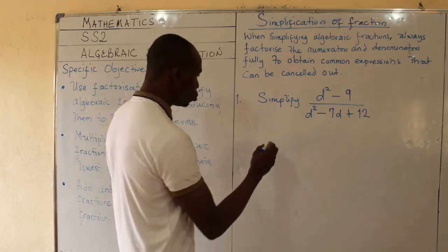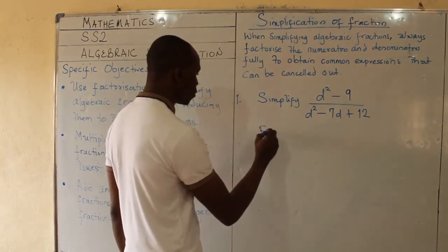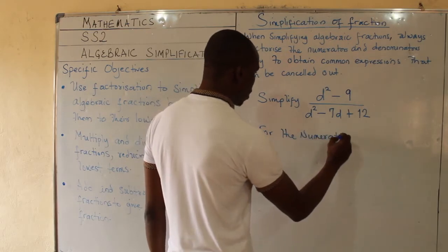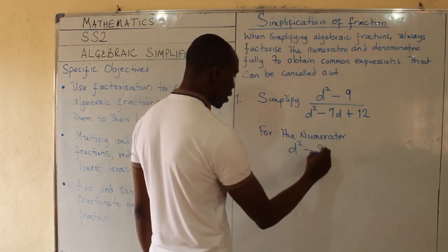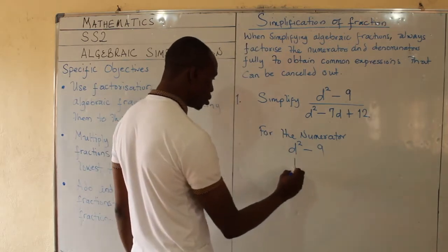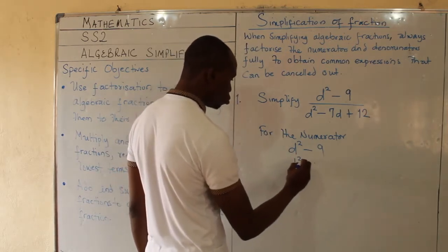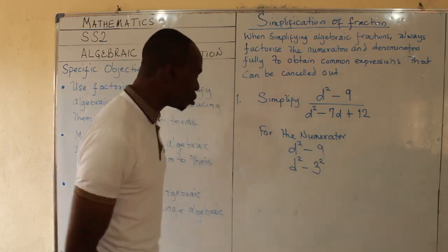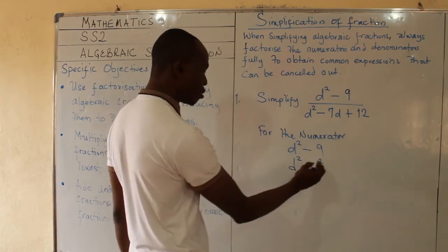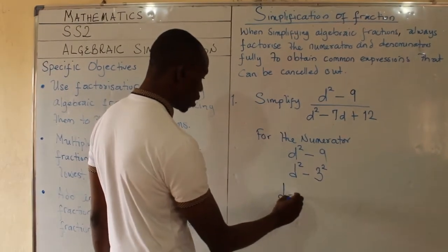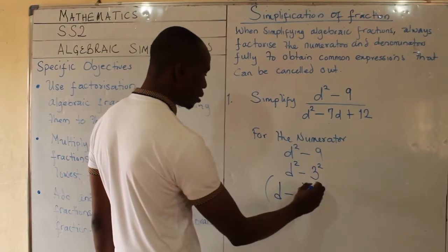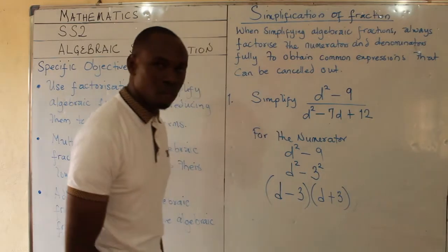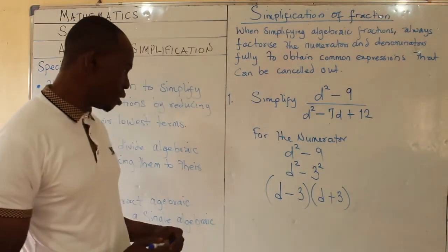How do I factorize an expression that is the difference of two squares? For the numerator, I have d² - 9. I change 9 to 3², and from our knowledge of difference of two squares, d² - 3² = (d - 3)(d + 3). I have been able to factorize the numerator.